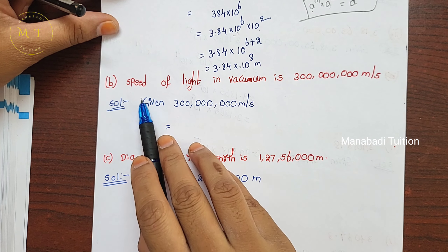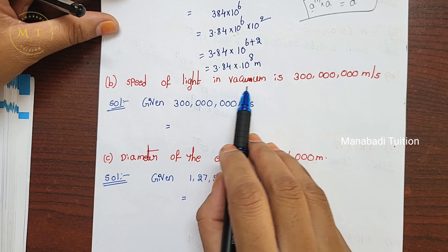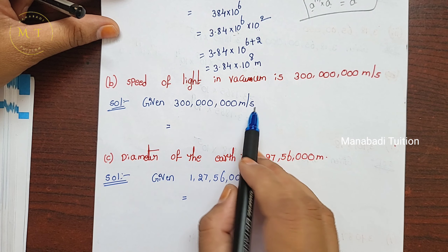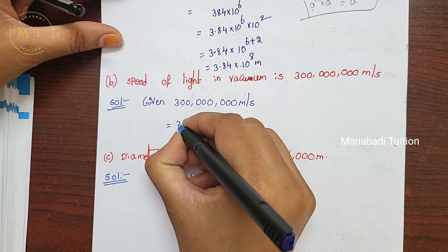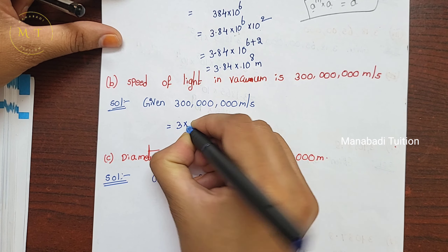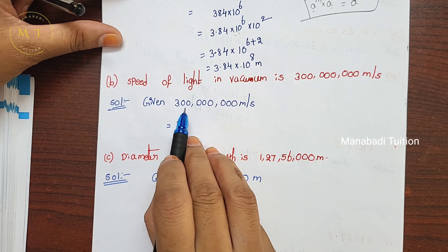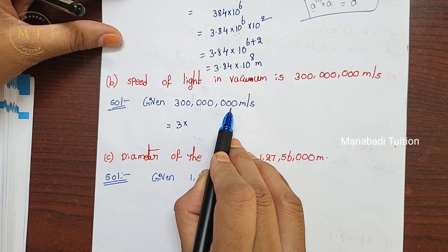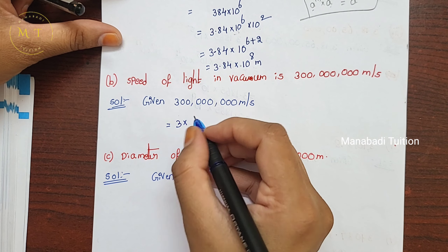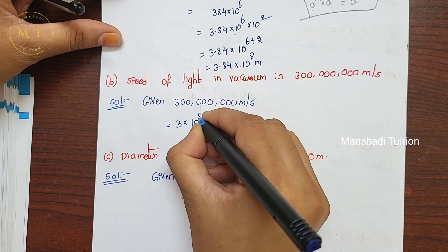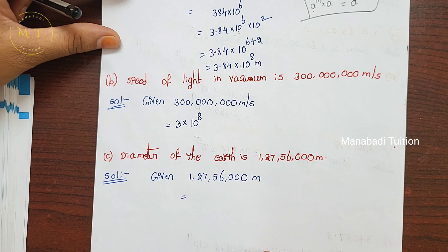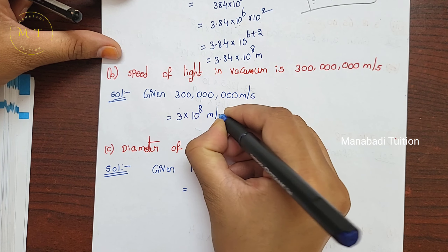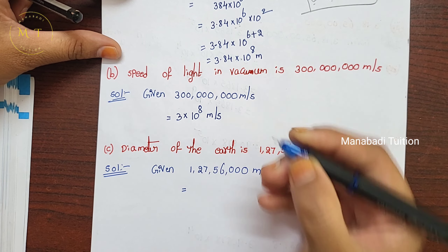Next, part B — speed of light in vacuum. Write the given number. Count the zeros: 1, 2, 3, 4, 5, 6, 7, 8 — there are 8 zeros, so write 10 power 8. The unit is meters per second, so write that as well.